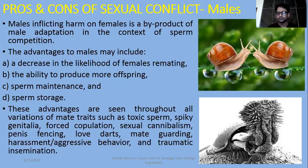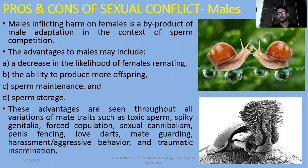For example: production of toxic sperm, spiky genitalia as shown in the lower picture, forced copulation, sexual cannibalism as discussed previously in the case of spiders, penis fencing, love darts inserted by certain types of snails, mate guarding, harassment, aggressive behavior, and traumatic insemination — in which one male injects sperm by developing a wound in the body of a female so that the female is unable to mate with other males.